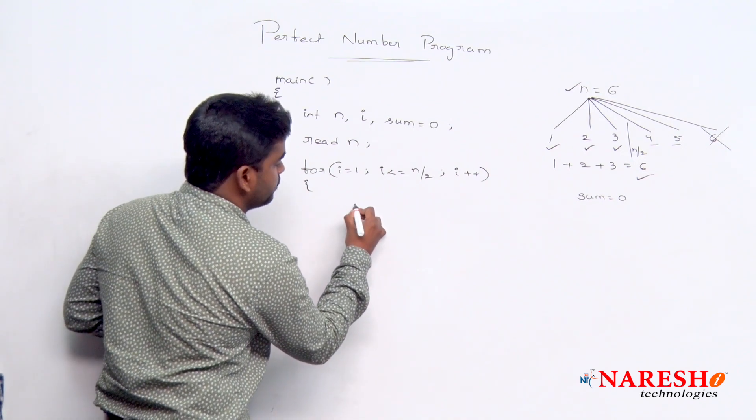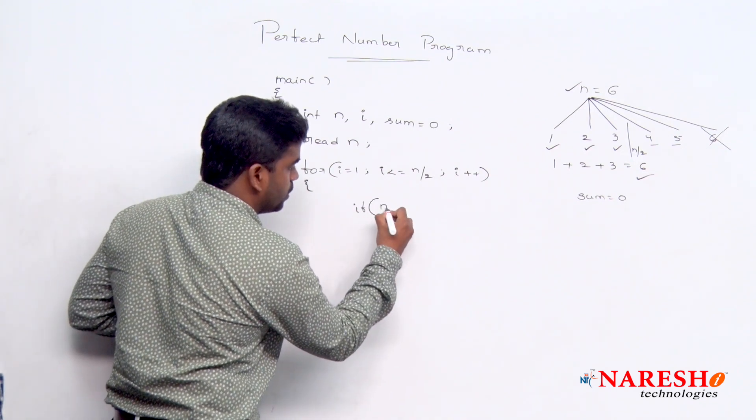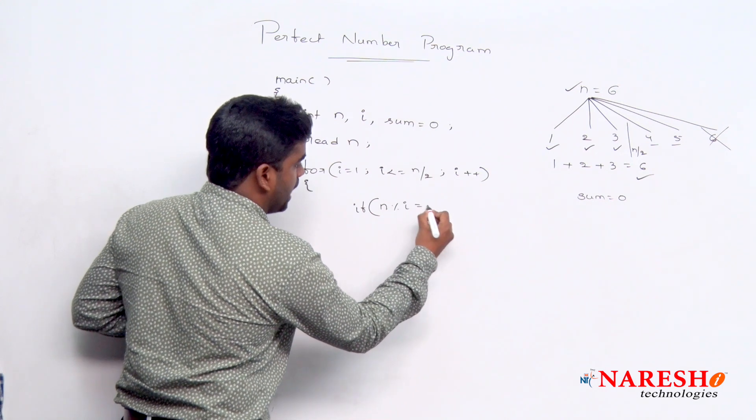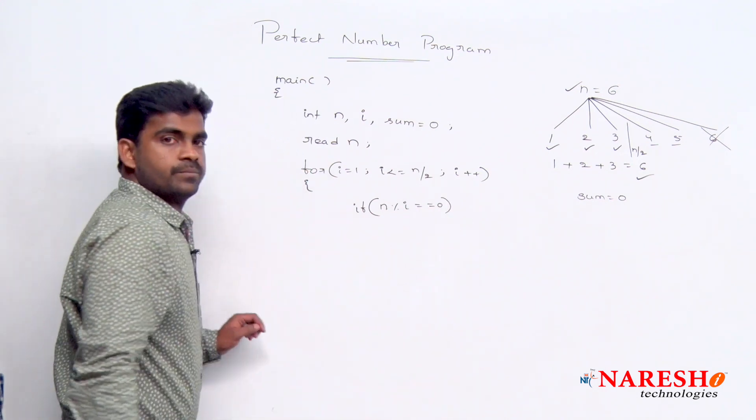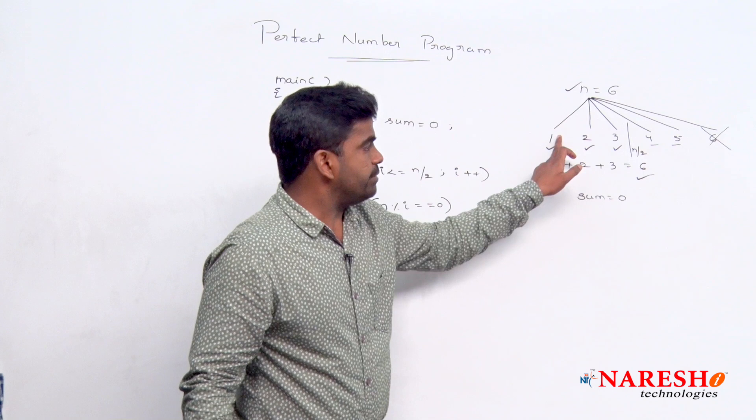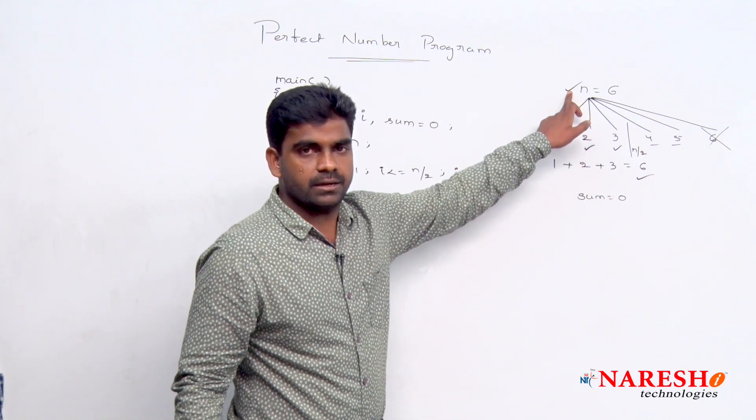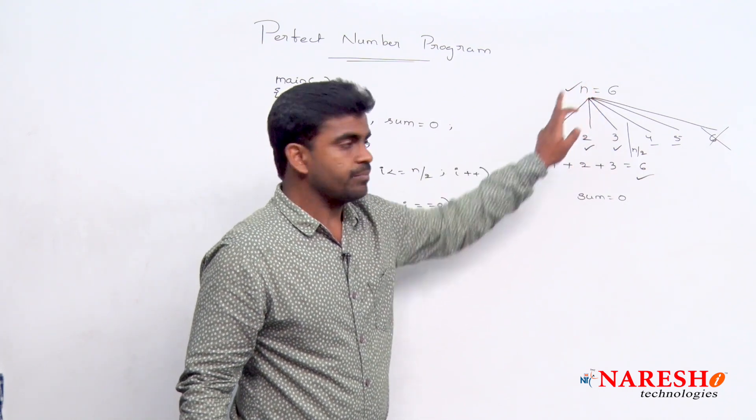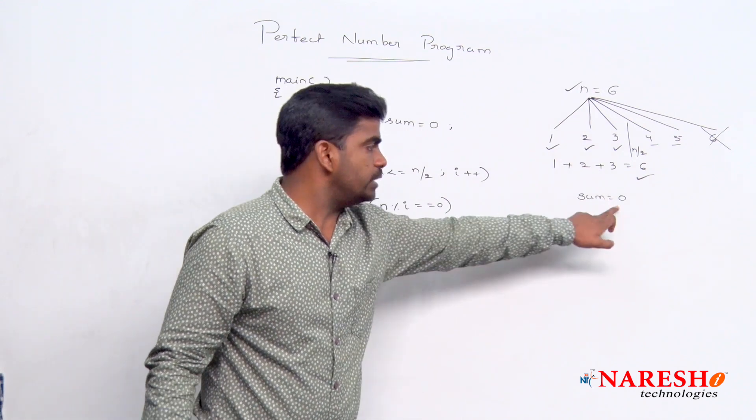So that itself value we are not adding to sum initially. So every time we are checking that factor is present or not. For n, i is a factor or not? Yes, i is divisible with n. 1 is divisible with 6. Whenever it is divisible, you add to the sum.